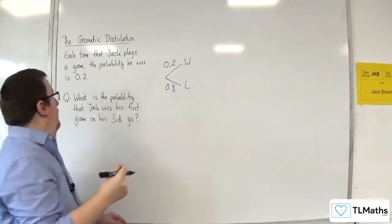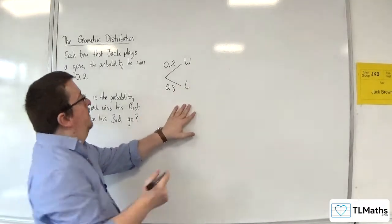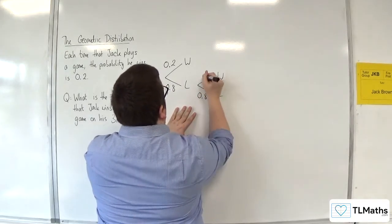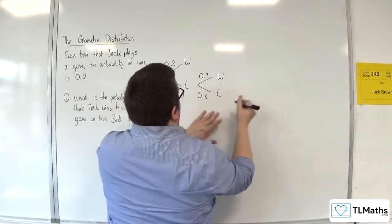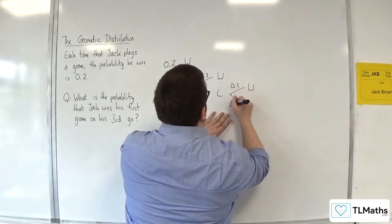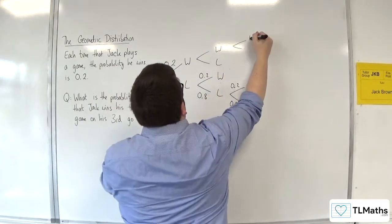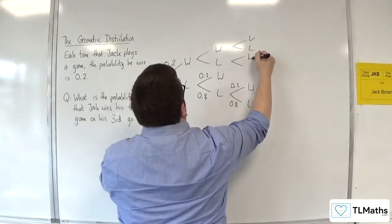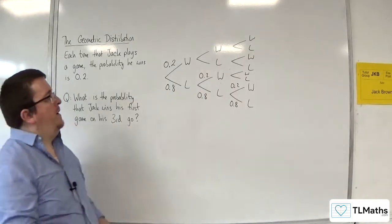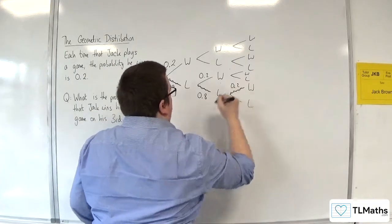We want to work out the probability that he wins on his third go. So he loses, then he loses again, and then he wins. The point is that Jack's going to lose, lose, then win.